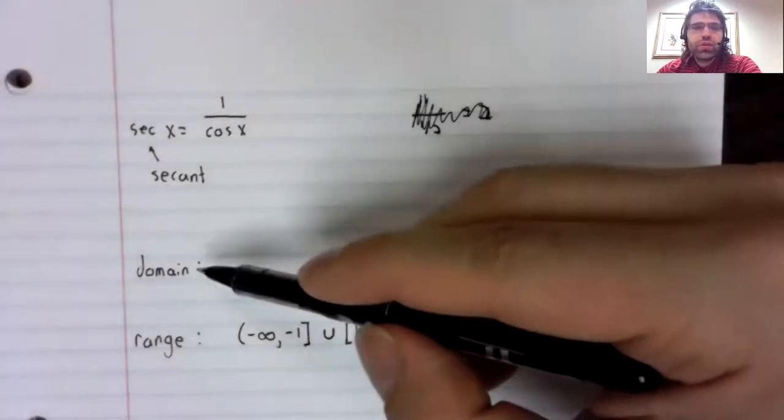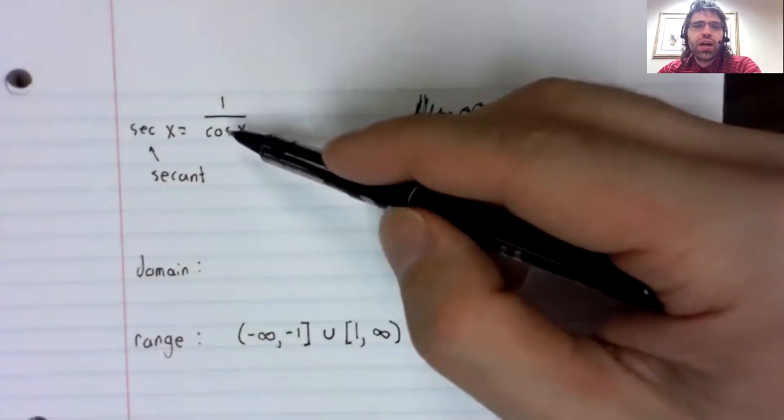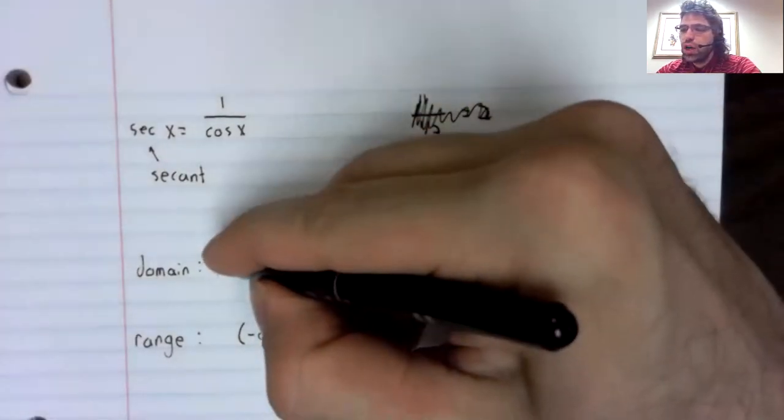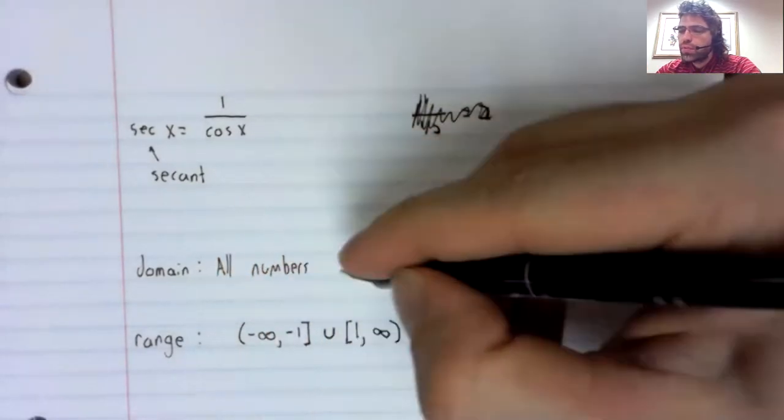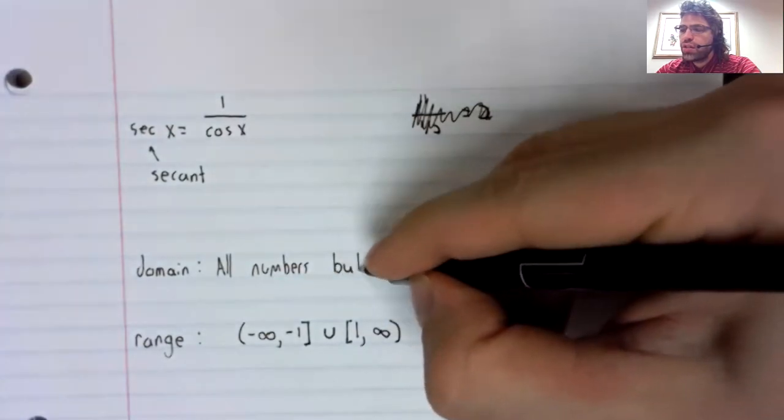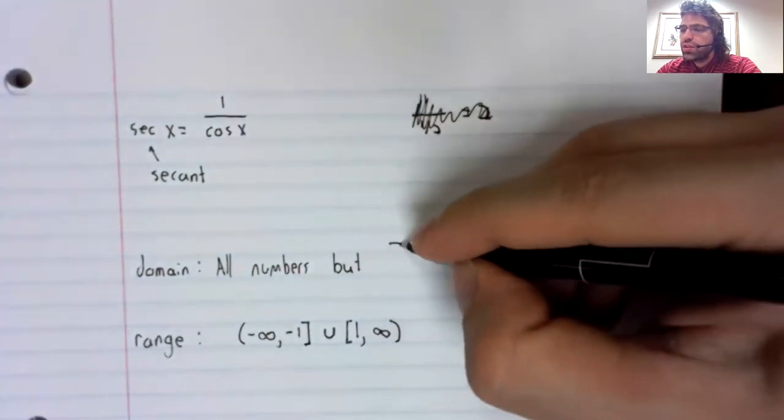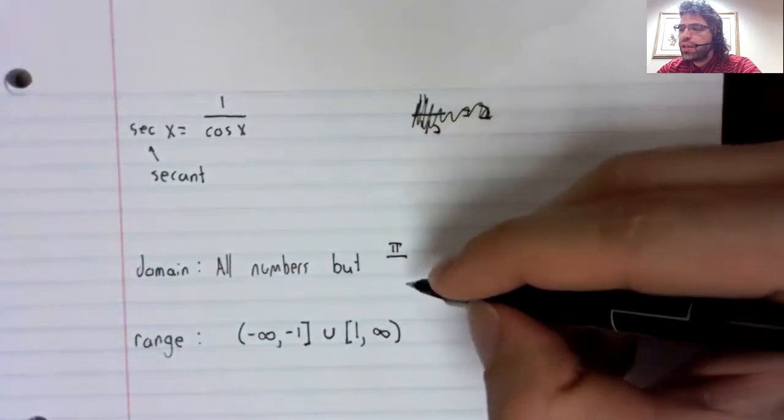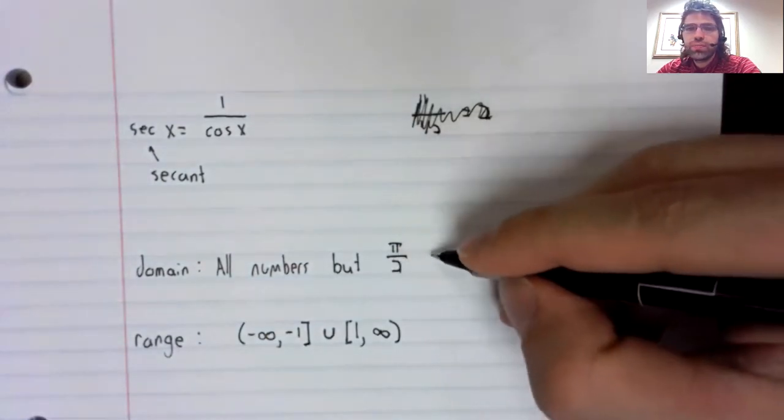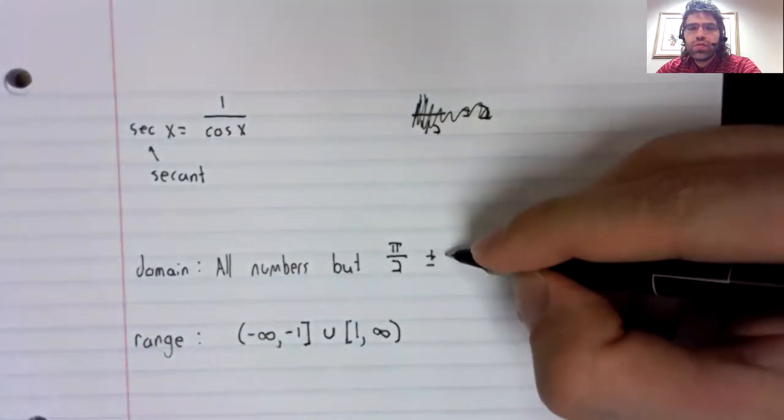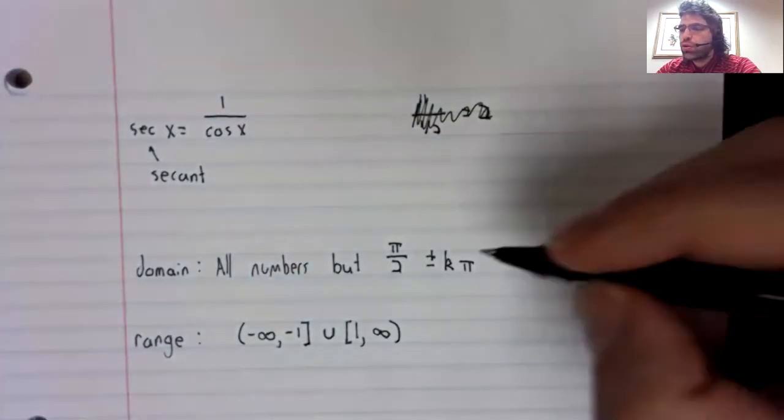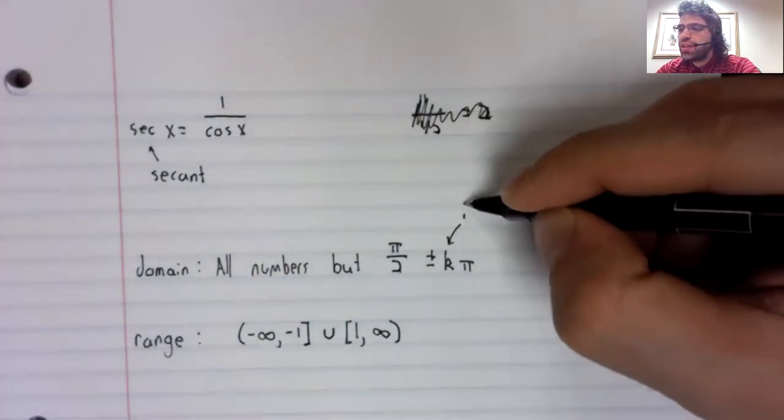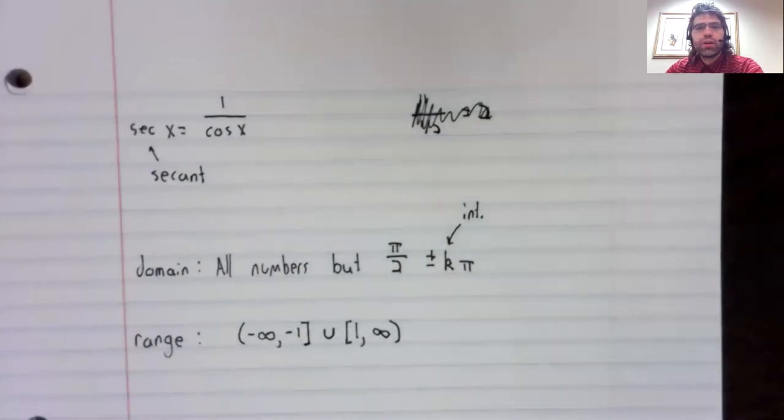As for the domain, we need the cosine to not be zero. So this gives us the same domain as the tangent: all of the numbers except pi over two plus or minus k pi, where k is an integer.